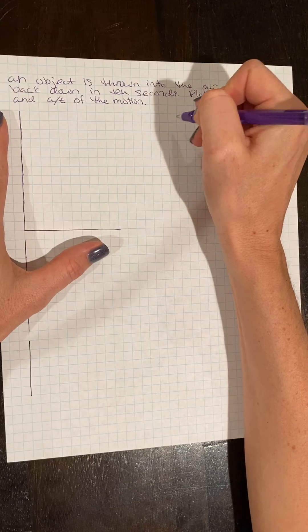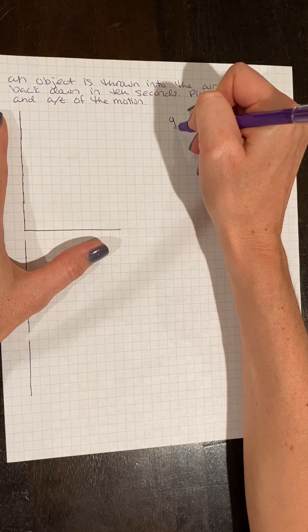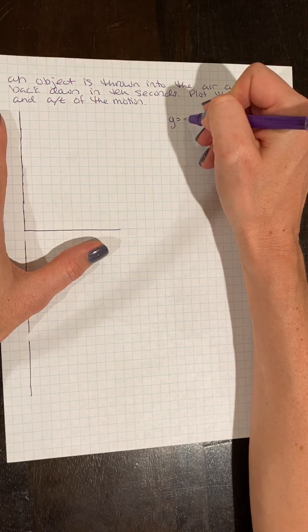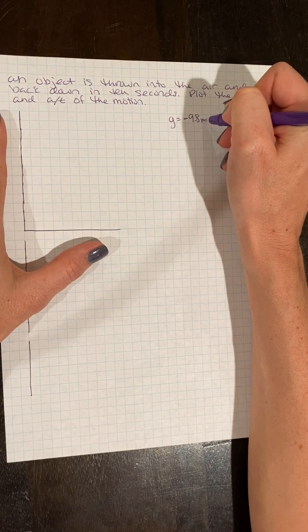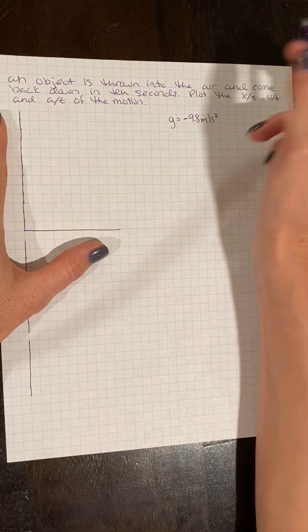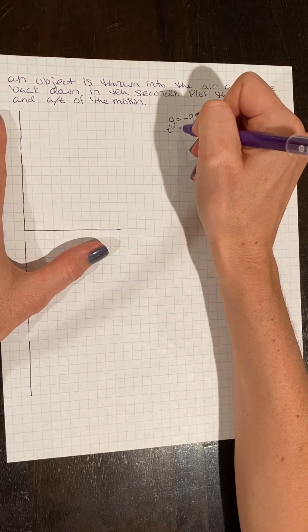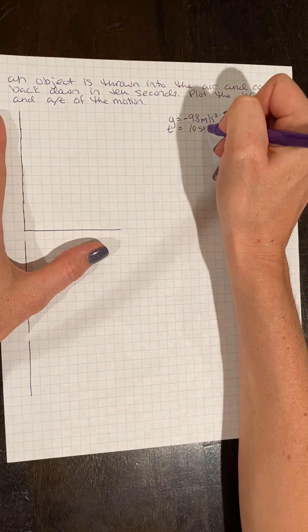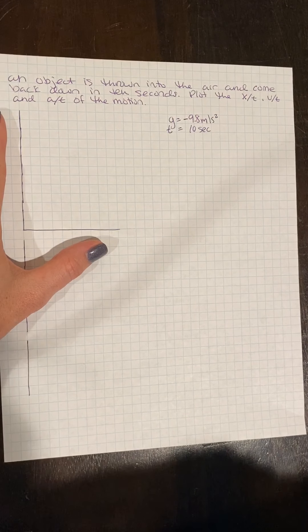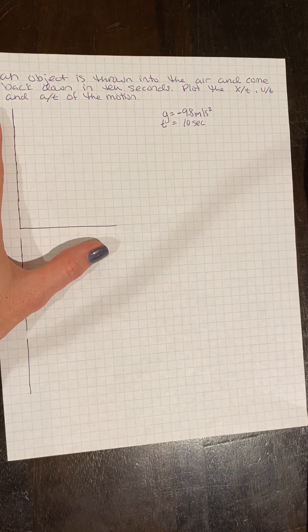Yesterday we learned that our acceleration is identified as g. It's going to be negative 9.8 meters per second squared. And we are given a time interval of 10 seconds, which is not that much information.